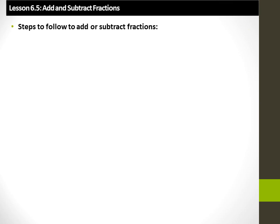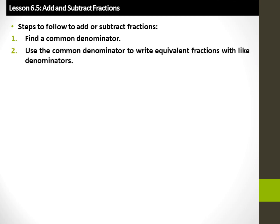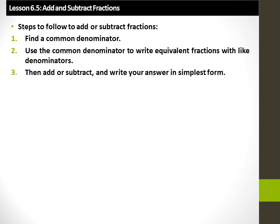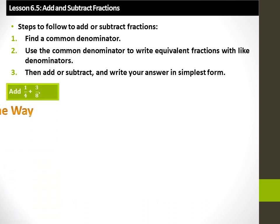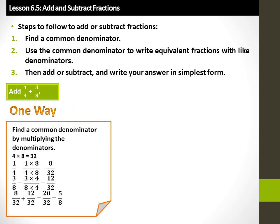Add and subtract fractions. Steps to follow: 1. Find the common denominator. 2. Use the common denominator to write equivalent fractions with like denominators. 3. Add or subtract and write your answer in simplest form. Let's add 1 over 4 plus 3 over 8. Finding the common denominator by multiplying: 4 times 8 is 32, so 1 over 4 is equal to 8 over 32 and 3 over 8 is equal to 12 over 32. 8 over 32 plus 12 over 32 is equal to 20 over 32. Dividing numerator and denominator by 4 gives the simplest form: 5 over 8.